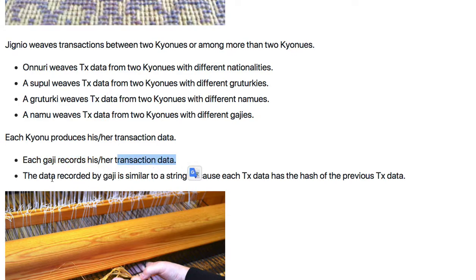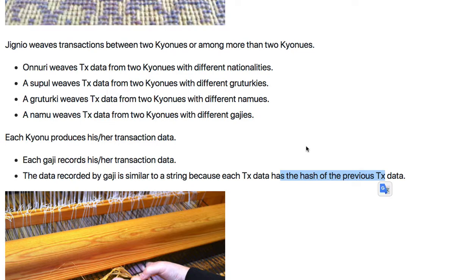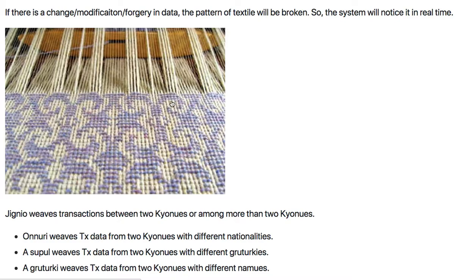The data recorded by gaji is similar to a string, because each transaction data contains a hash of the previous transaction data. I'm sure you know what a hash is, and what transaction data and previous transactions are — it's all explained in the openership platform concept. Each string is managed by each person or entity.